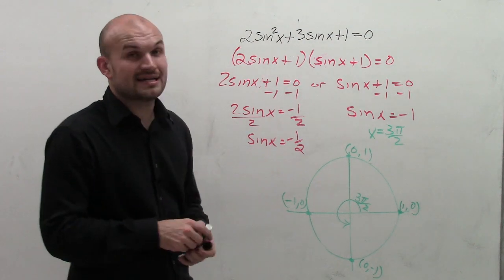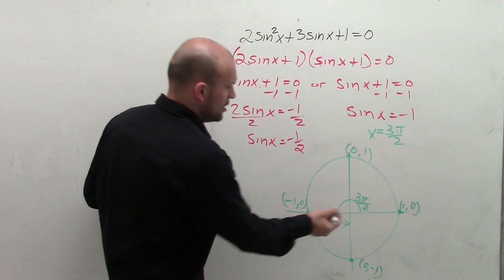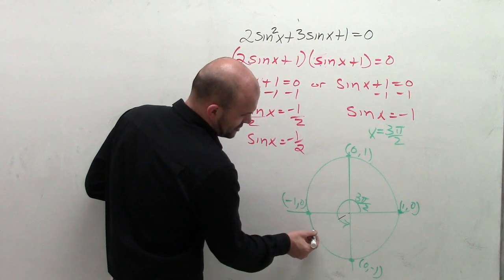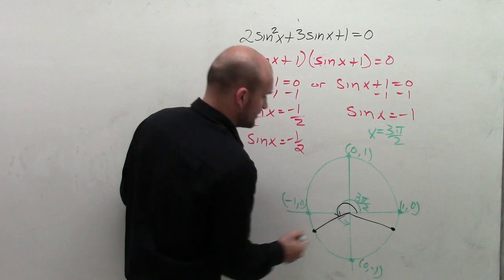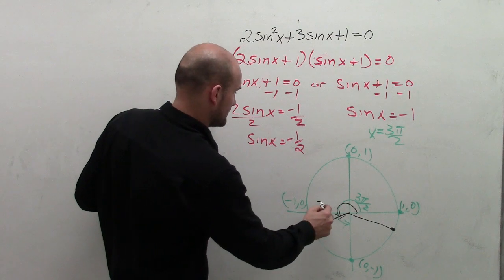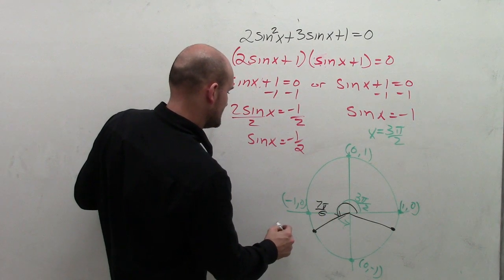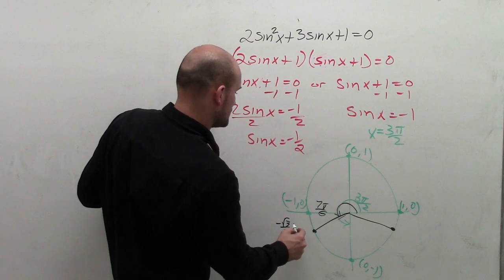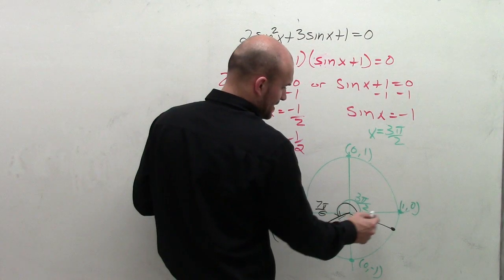However, now I also need to find out the points where sine of x equals negative 1 half. Well, that's going to occur at two angles, which is going to be right here and right here. So the first angle is going to be 7 pi over 6, which has the coordinate point of negative square root of 3 over 2, negative 1 half, where you can see the y-coordinate is equal to negative 1 half.